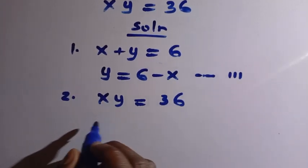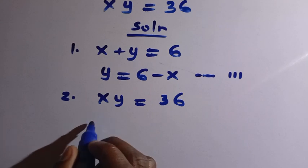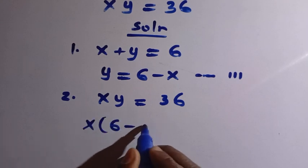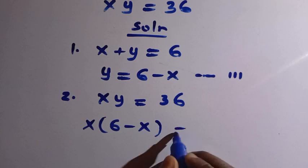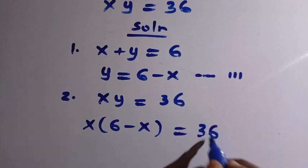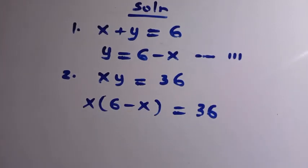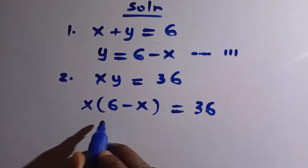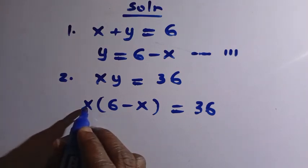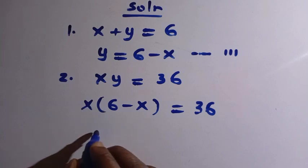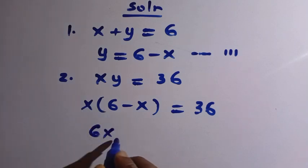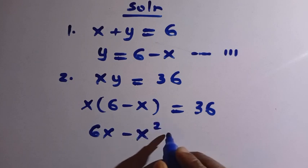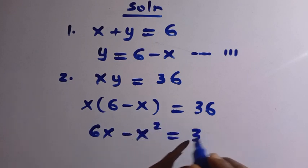We replace y in equation 2 with equation 3, so our new equation becomes x times (6 minus x) equals 36. Opening the parenthesis: x times 6 gives 6x, minus x times x gives x squared, so we have 6x minus x squared equals 36.